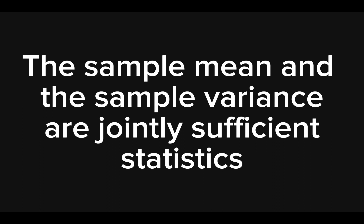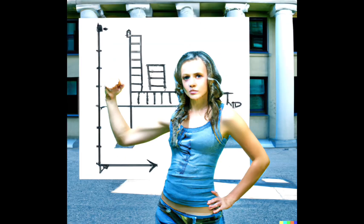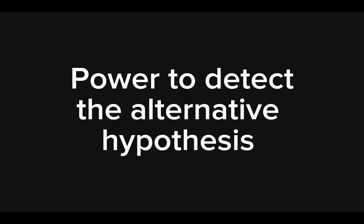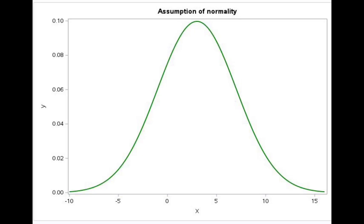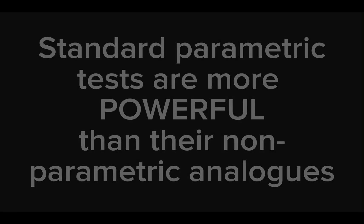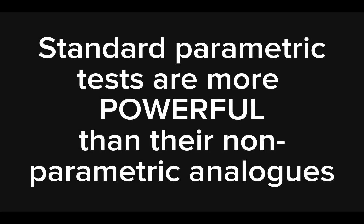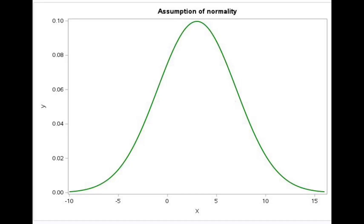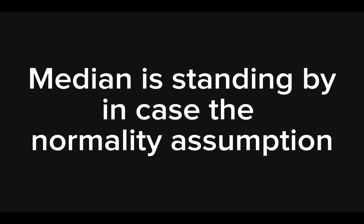But there is another reason to use the sample mean rather than the median, and this reason has to do with statistical hypothesis testing and power to detect the alternative hypothesis. This is the real practical reason why we use means. Under the assumption of normality, our standard parametric tests based on sample means and variances are more powerful than their non-parametric analogs. Remove the assumption of normality and you may be better off dealing with the median. So make sure students know that the median is standing by just in case that beautiful normality assumption fails.